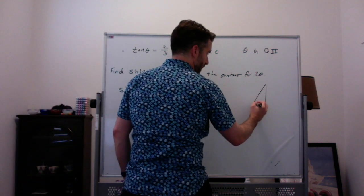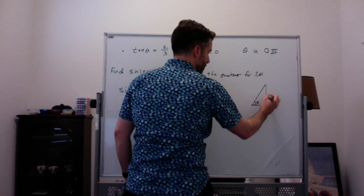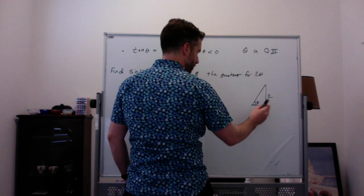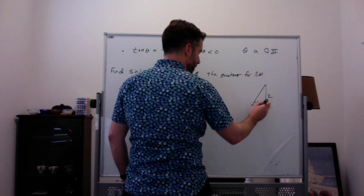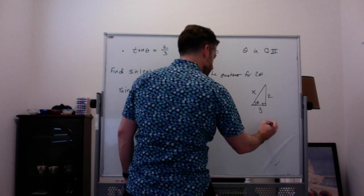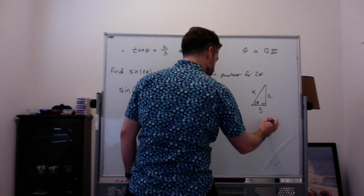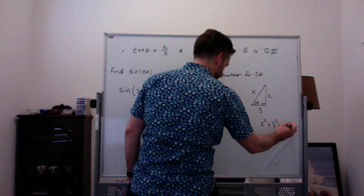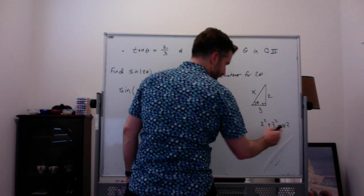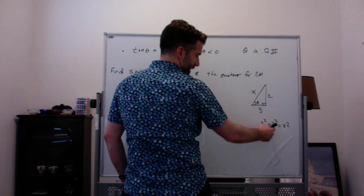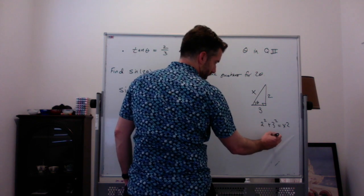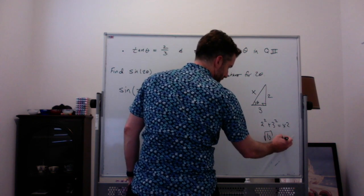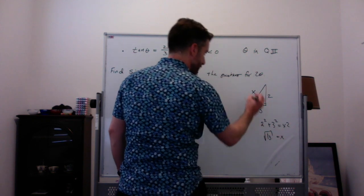Tangent of theta is 2 over 3, which is opposite over adjacent. Finding the third side: 2 squared plus 3 squared equals x squared. 4 plus 9 is 13, so taking the square root, x is the square root of 13.